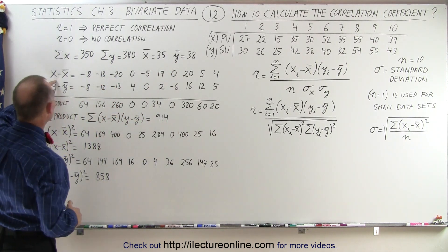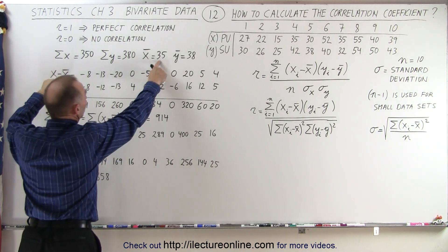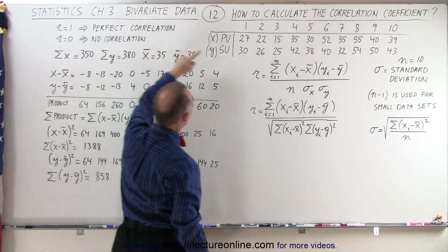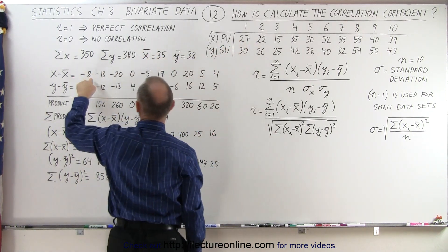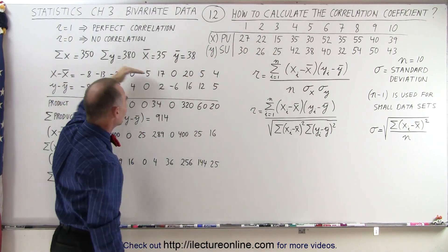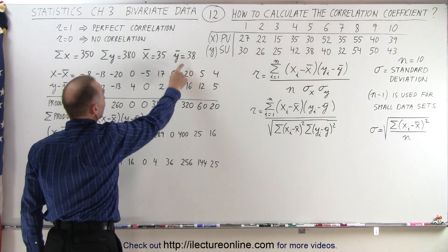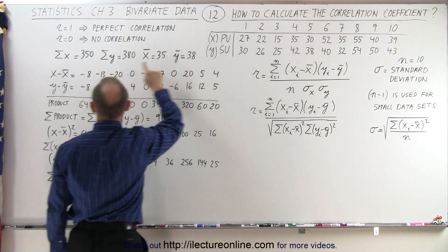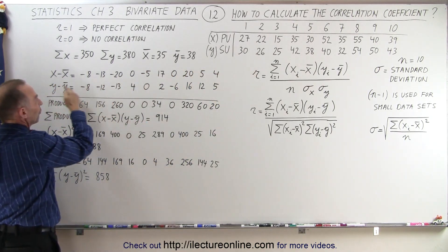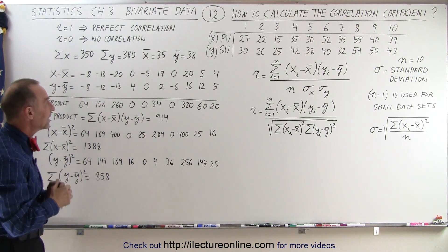Next, we take the difference between each x value and the average of 35: 27 minus 35 is −8, 22 minus 35 is −13, 15 minus 35 is −20, and so forth for all x values. We do the same for the y values with an average of 38: 30 minus 38 is −8, 26 minus 38 is −12, and so forth — giving us all the differences between the y values and the average.